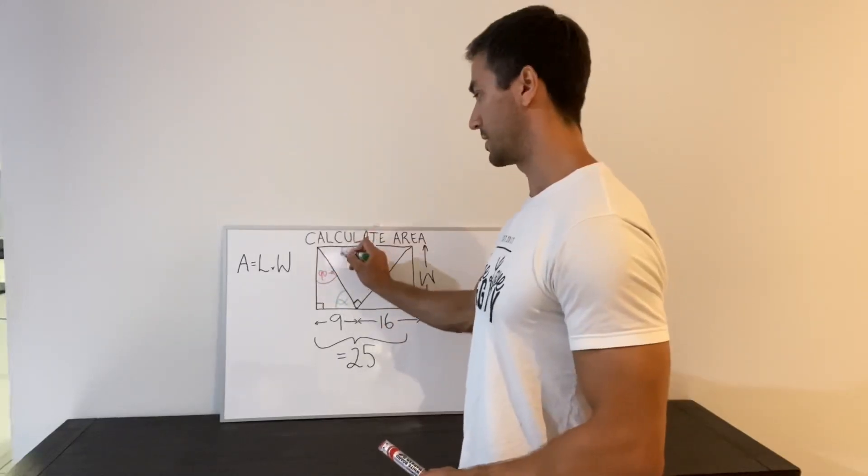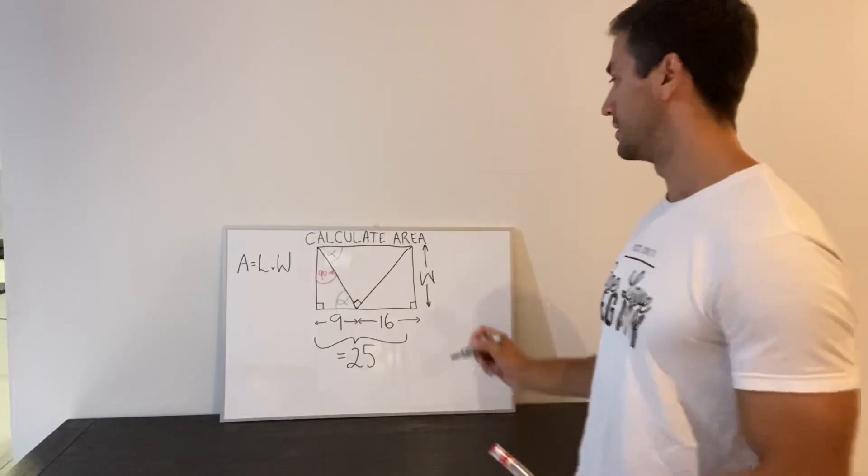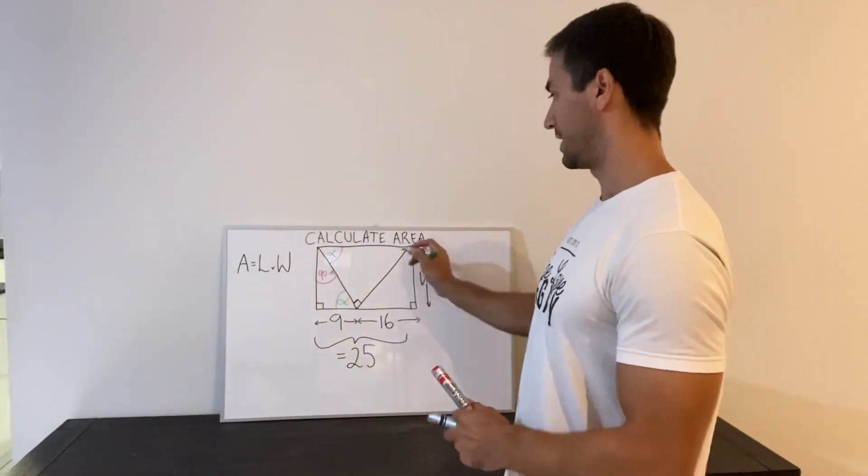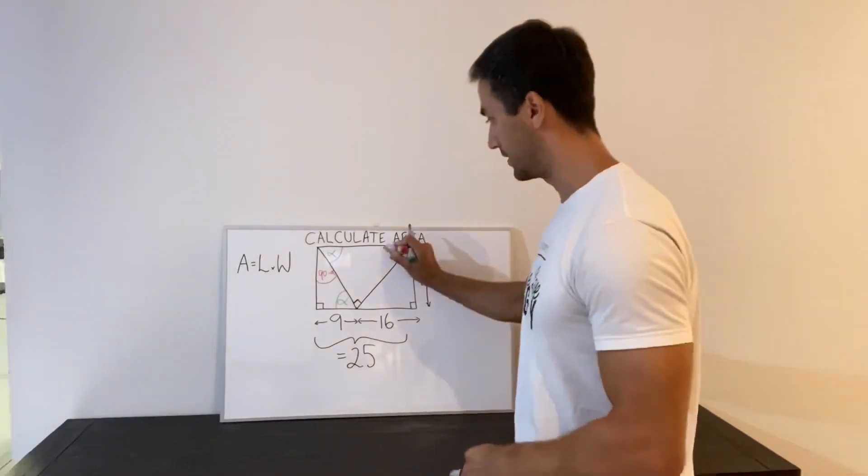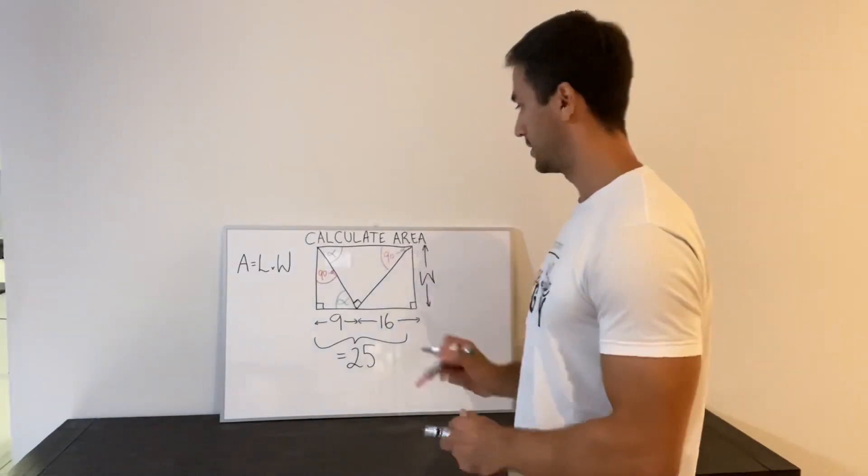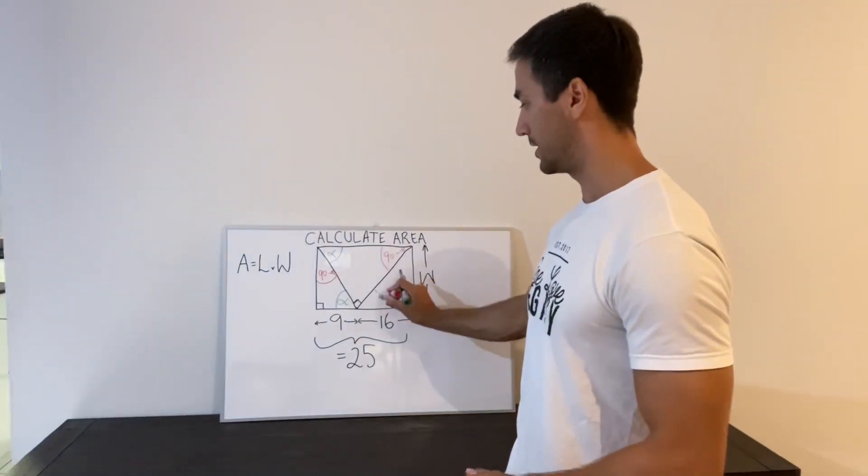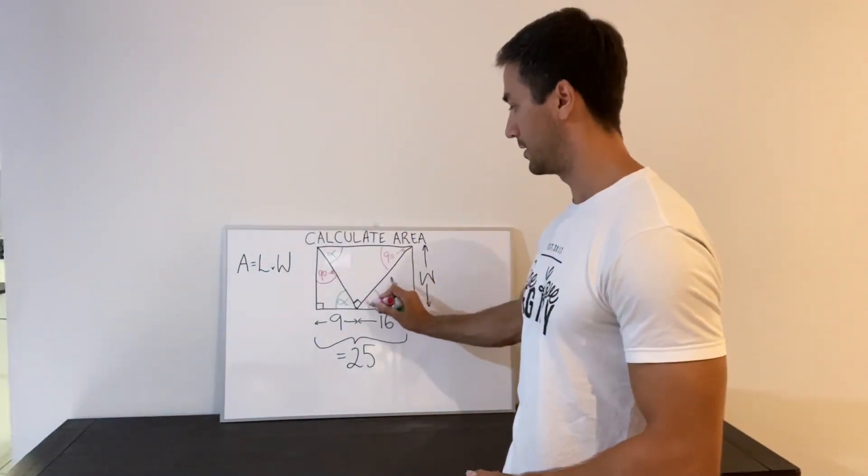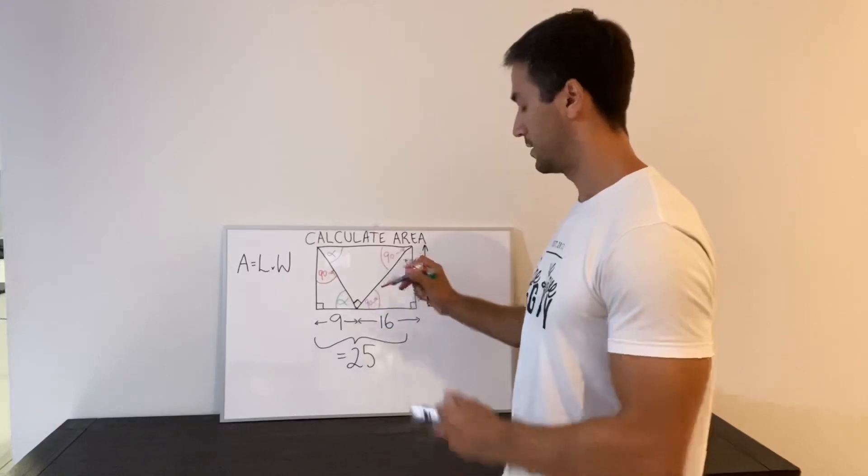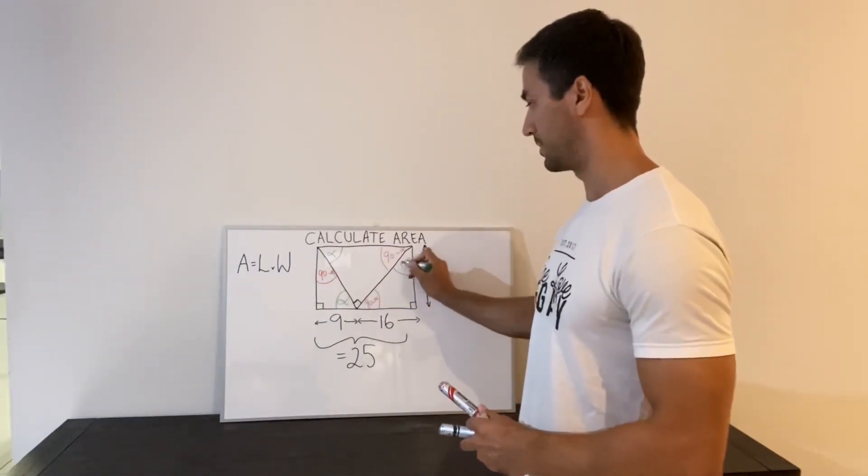So for example the Z rule here tells us that this angle is also alpha. Which means this angle here is again 90 minus alpha. And so then the Z rule again tells us that this angle here is 90 minus alpha.